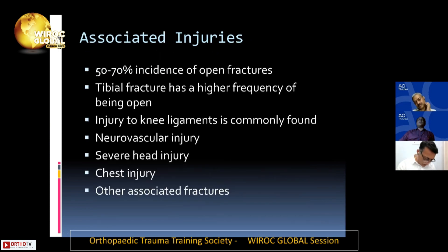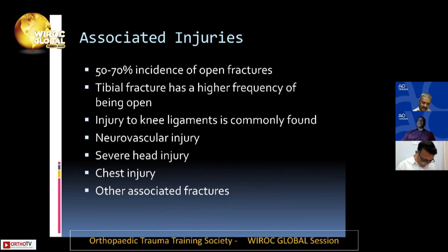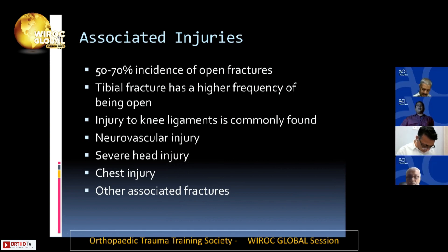Because these are high energy trauma cases, always look for associated injuries. There is about a 50 to 70 percent incidence of open fractures, and tibial fractures have a higher frequency of being open. Knee ligament injury is also commonly found — if suspected clinically, get an MRI to assess ligamentous injury. Also consider chances of neurovascular injury, severe head injury, chest injury, and other associated fractures.